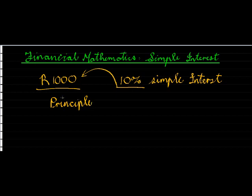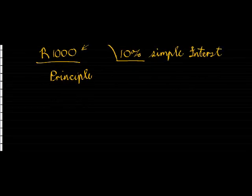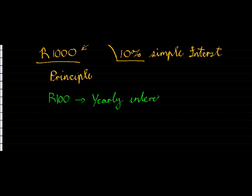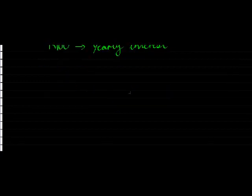It is calculated on the principal value. In other words, if I look at 10% of a thousand, that's a hundred rand. So your yearly interest will be a hundred rand. At time zero, I'm going to have a thousand rand.